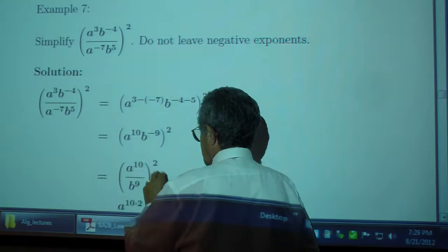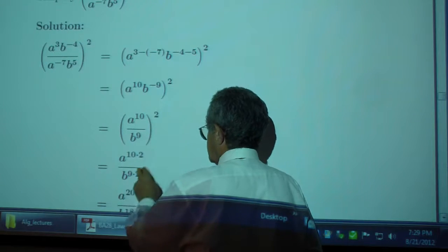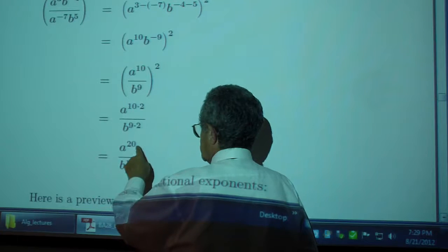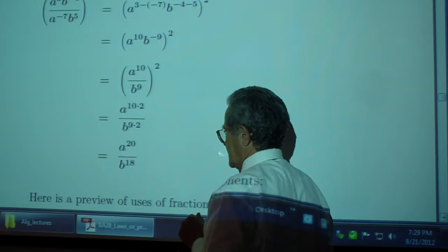Quantity squared, 10 times 2, 20. 9 times 2, 18. We cannot subtract 18 from 20 because the bases are not the same.